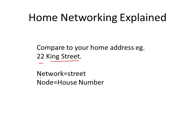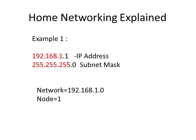On our network, the street address corresponds to the network and the house number corresponds to the node. Here's the IP address again, now split: the red part is the network part and the black part here is the node or host part. So we have a network of 192.168.1 and a node of 1.